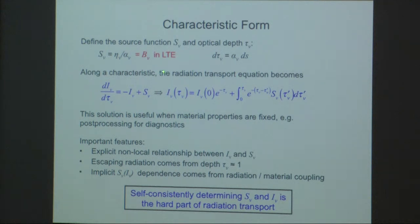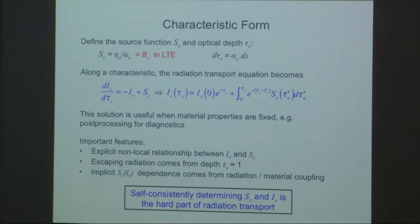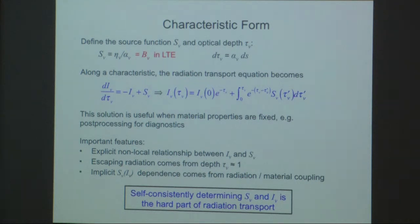In LTE, the source function — the ratio of the emission to the absorption coefficient — just gives you the Planck function. This comes about by detailed balance and is true for each radiative transition independently. This simple form of the equation is a first-order linear differential equation, and we can write down the solution — the characteristic solution — and get some properties of what happens through radiation transport.